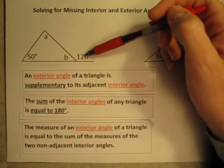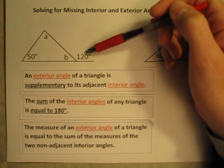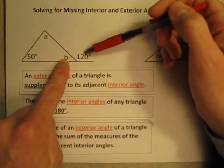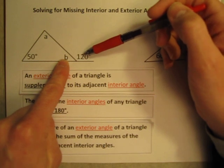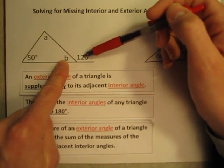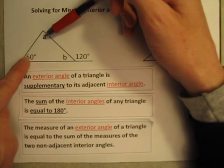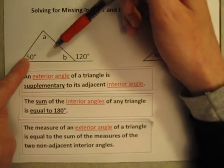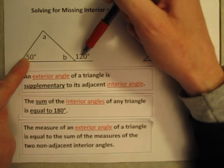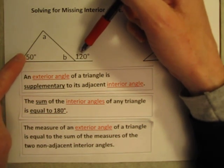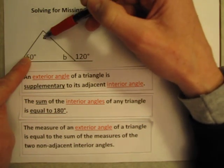That one needs a little explanation maybe. So this angle here, this exterior angle 120 degrees is adjacent to angle B. But we want to compare that to the two non-adjacent interior angles, which are these two over here. This 50 degree angle and angle A. So we know 120 degrees is equal to 50 degrees plus angle A.